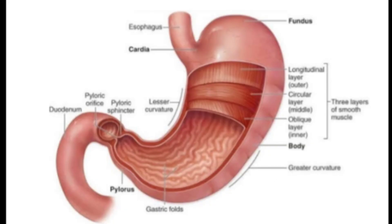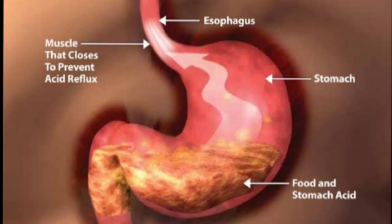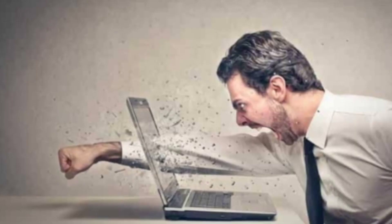एक सामान्य पेट में एक लीटर भोज्य पदार्थ आ सकता है। कभी-कभी पेट में अधिक रस बनने लगते हैं, जिनके कारण पेट में बेचैनी और जलन महसूस होने लगती है। भावुकता, भय, क्रोध, तनाव आदि के कारण पाचक रसों का निर्माण अधिक होने लगता है।